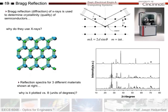Let's wrap this one up. When we talk about optical interference, we might as well touch on a couple topics which are going to take us beyond just visible light. The first one is Bragg reflection, particularly used for x-ray analysis of materials such as crystallinity of semiconductors.